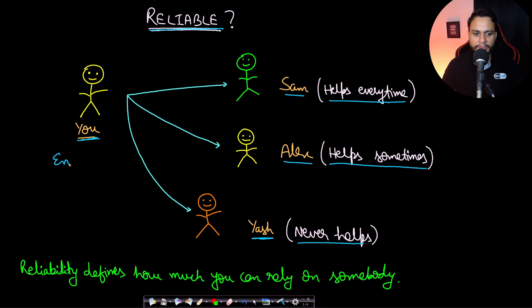Now consider a scenario that you are in an emergency and you need immediate help. It will be highly likely that you will first ask Sam, then Alex if you couldn't get help from Sam, and if you cannot get help from Alex, then you will ask Yash. Why do you ask in this top-down approach? Because you know that in an emergency, time is of essence and you don't want to waste it. If you ask from Yash, you already know it's very highly likely that Yash will not help you.